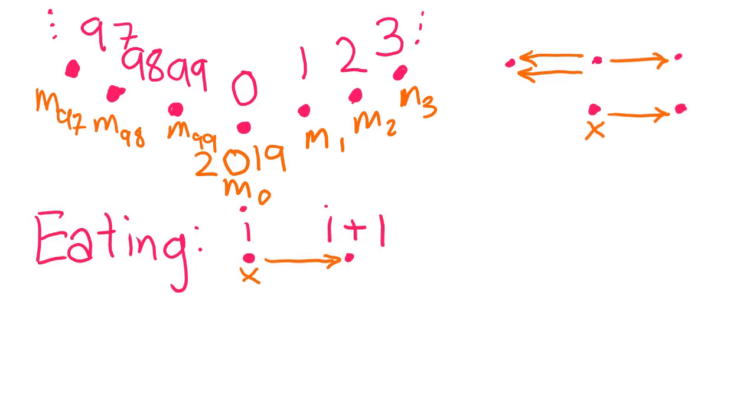In a sense, a mango person i+1 has is worth twice as much as a mango person i has. This motivates considering the quantity m_i + 2 times m_{i+1}. Subtracting 2 from m_i and adding 1 to m_{i+1} leaves this expression the same. We want to weight m_{i+1} twice as much as m_i.